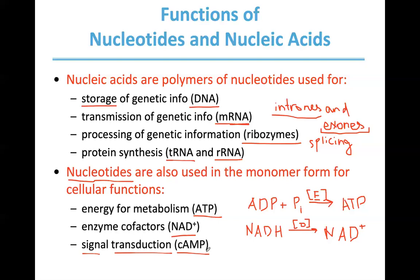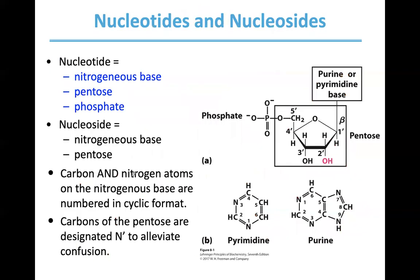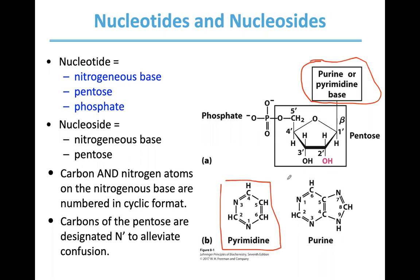Any questions on functions? Now let's look at nucleotides and nucleosides. Here is the main structure of a nucleotide. Nucleotides have three components: first, a nitrogenous base. There are two main structural types of nitrogenous bases: pyrimidine and purine.